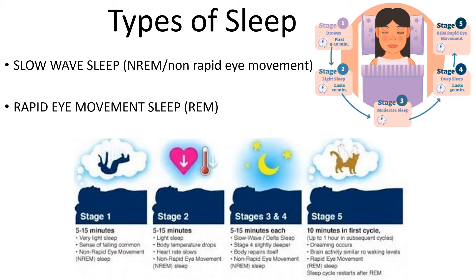Types of sleep: the first type is non-dream sleep or non-rapid eye movement sleep, also called slow-wave sleep because brain waves are very slow in this type. The second type is rapid eye movement sleep, also called paradoxical sleep, fast-wave sleep, or desynchronized sleep. These two types of sleep alternate with each other in a sleep cycle.